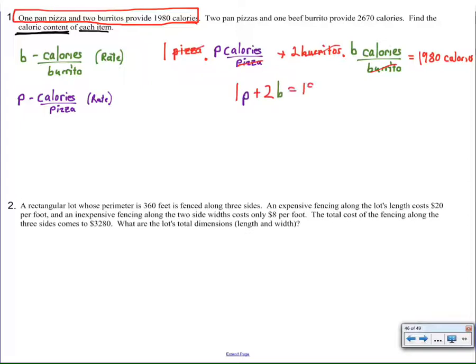Similarly - oh sorry, before I do that - we can see here that the burrito technically cancels with burrito, and we're left with calories, and here we're also pizza divided by pizza is leaving us with calories as well. So here we have 1p calories plus 2b calories equals 1,980 calories. It's the calories that have to all add up together, and that works with dimensional analysis.